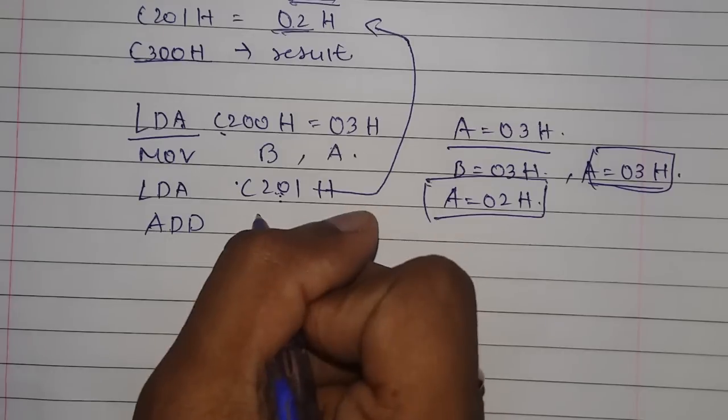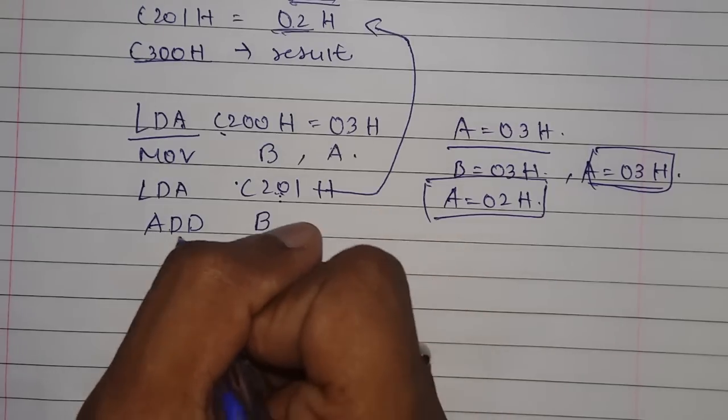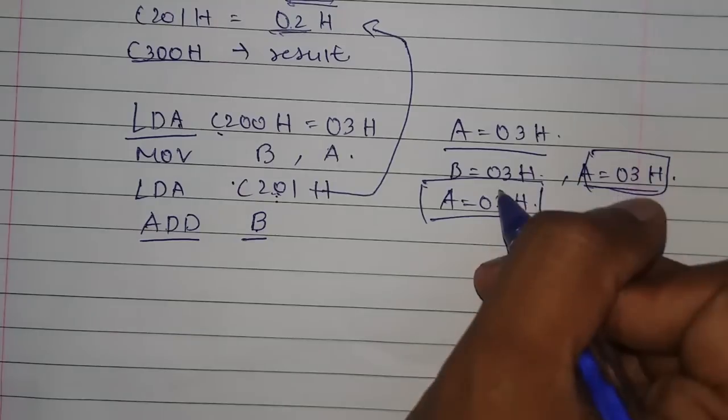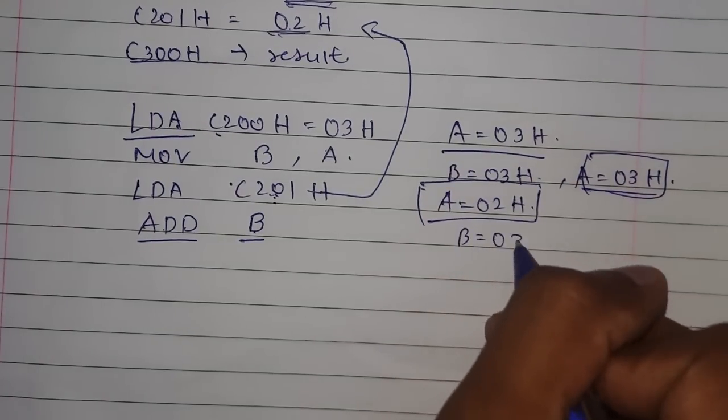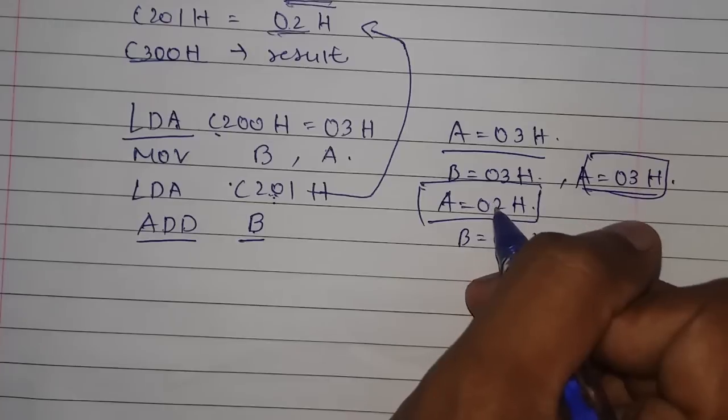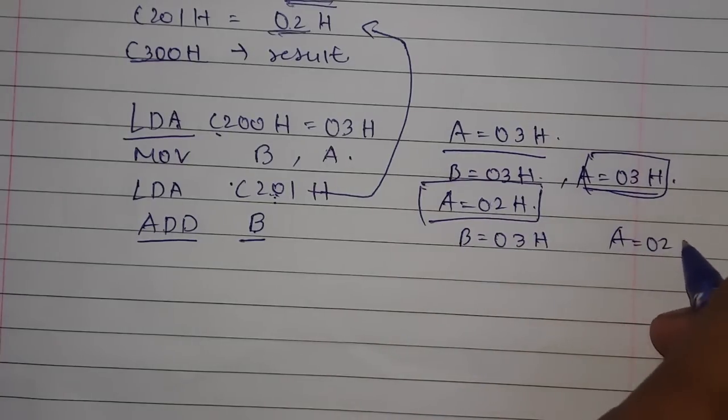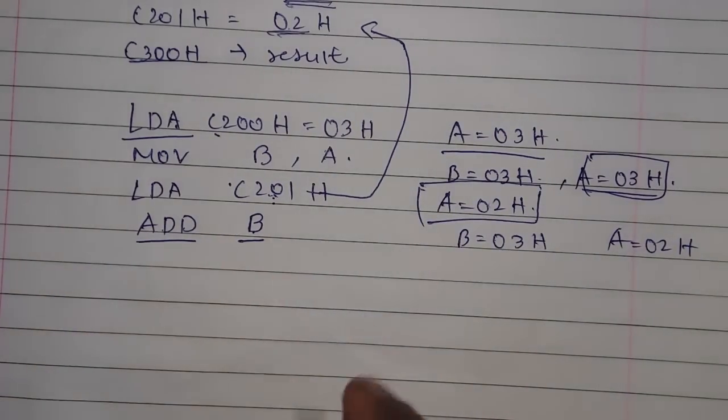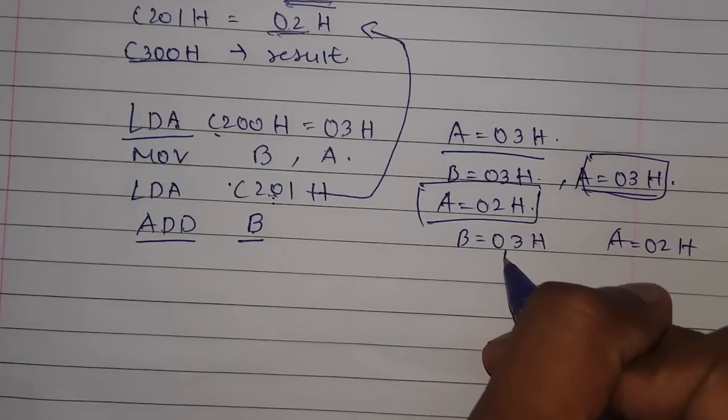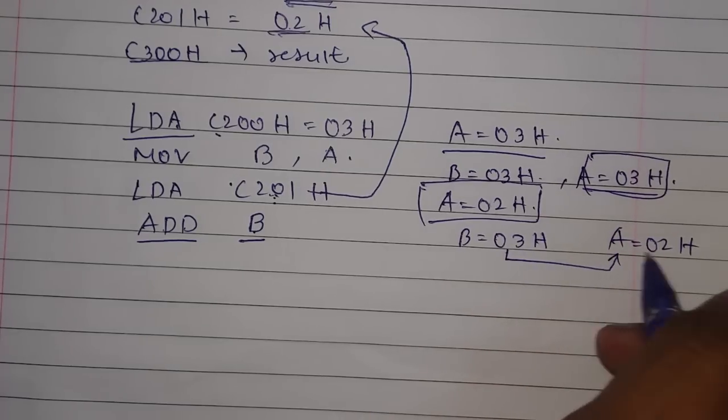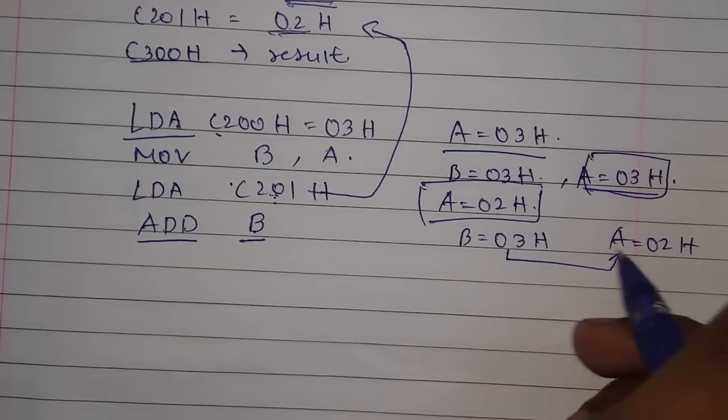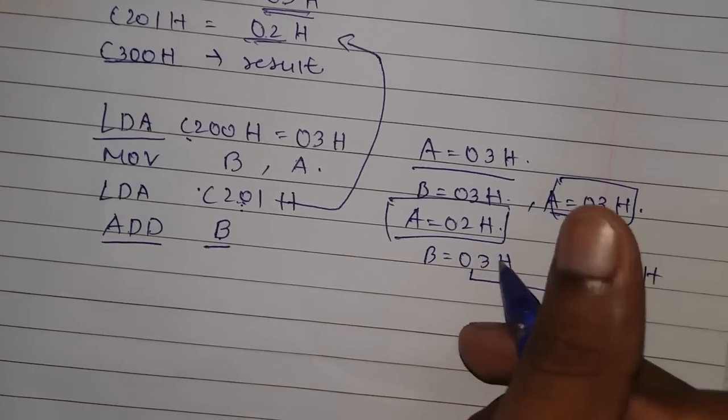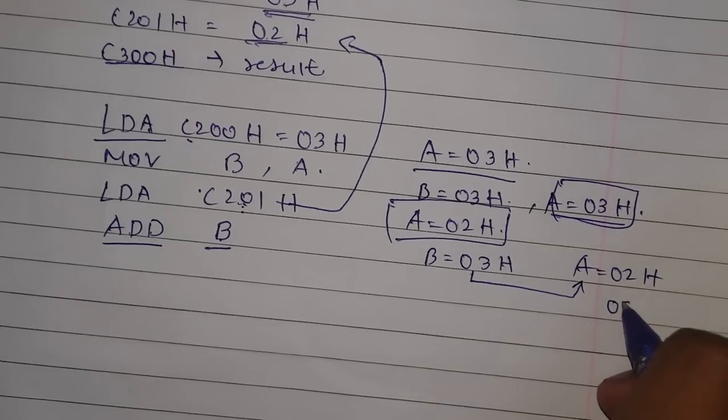Now we will apply this instruction which is ADD B. This register B has 03H and accumulator has 02H. When we do ADD B, the contents of B will be added to contents of the accumulator. Now after this addition is done, our answer will be 05H.